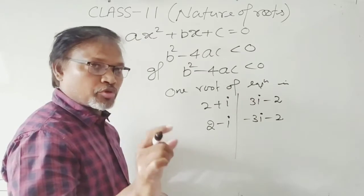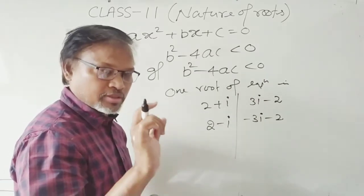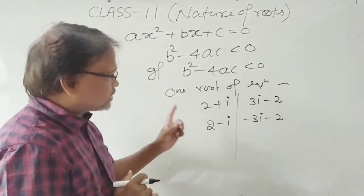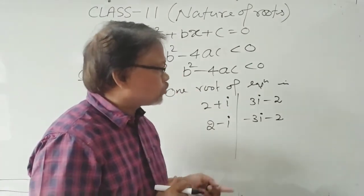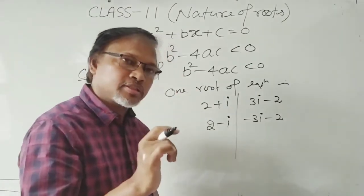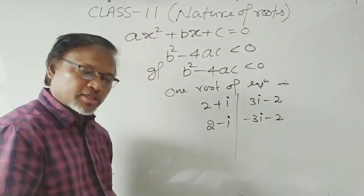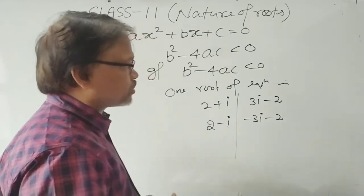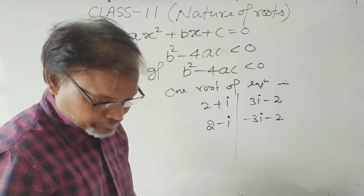One more example: if 3i − 2 is one root of the equation ax² + bx + c = 0, what is the second root? The second root will be −3i − 2 — only change the sign of the imaginary part, not the real number. This is the method to recognize rational roots, irrational roots, complex/imaginary roots, and equal roots.